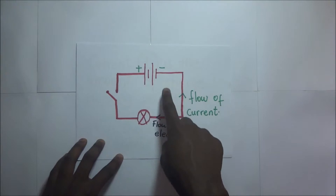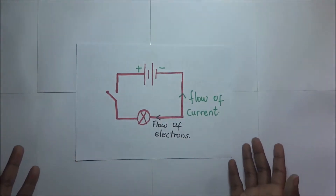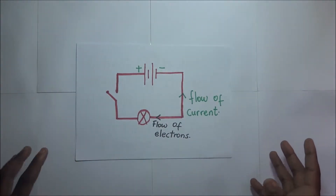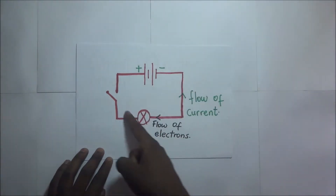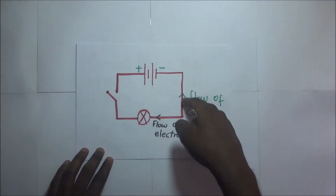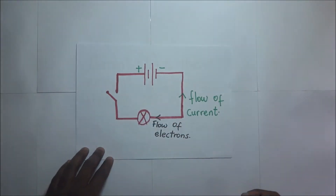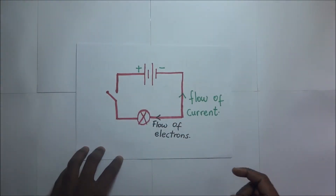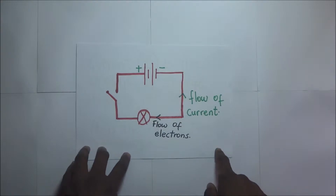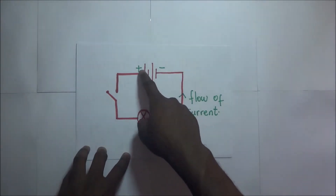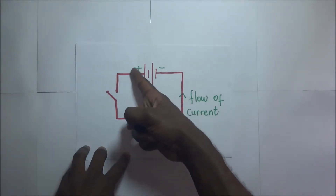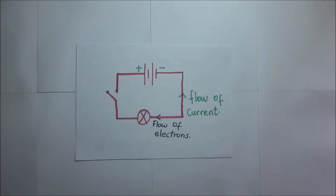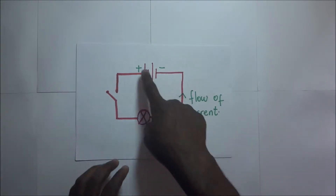You'll find some scientists saying that electricity flows from the negative side to the positive side, because that is where the electrons are flowing. Then other scientists will tell you that electricity flows from positive to negative — the direction a positive charge would be flowing in the circuit.